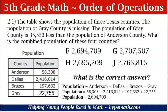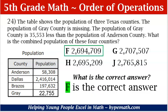What is the correct answer? We know what our total population is — now all we need to do is look very closely at our answer choices to see which letter has 2,694,709 as their value. And if you said F, you are correct. That was a good one.